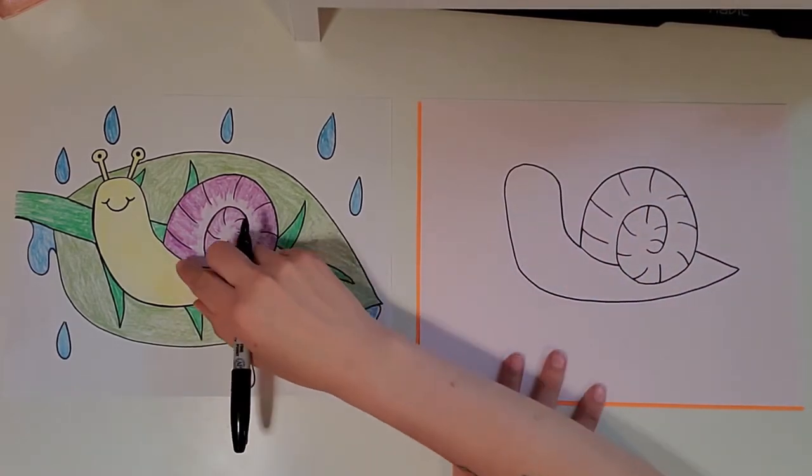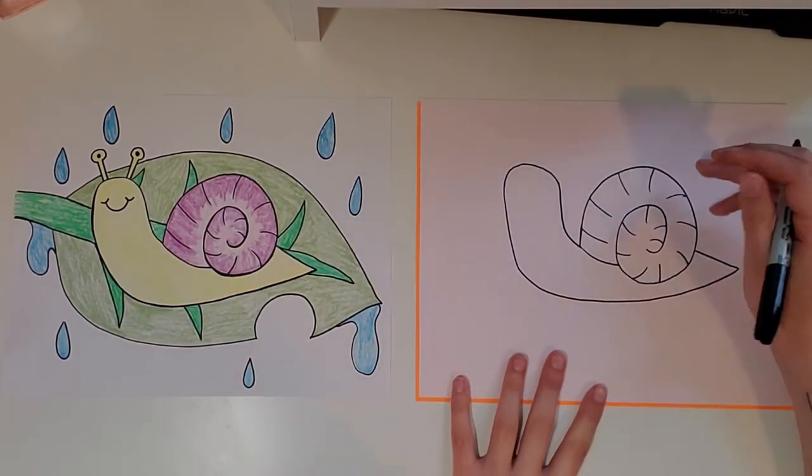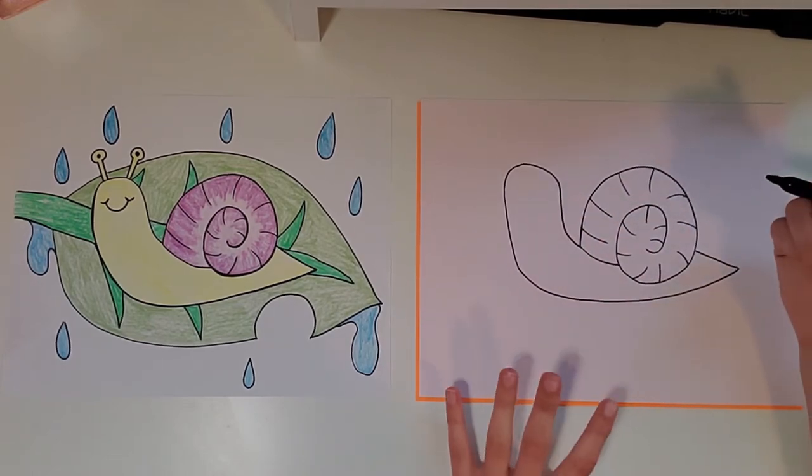On this one, the snail's body is really thick compared to the shell. It's a little bit smaller. On this one, they're a little bit more even. Either way is fine.